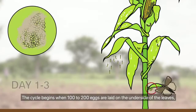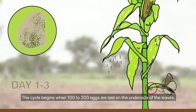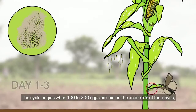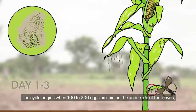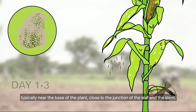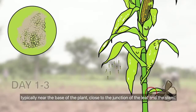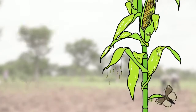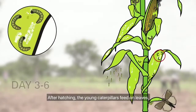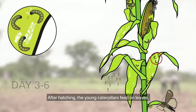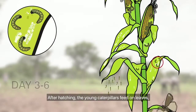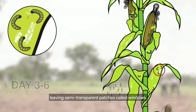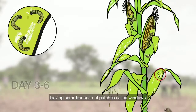The cycle begins when 100 to 200 eggs are laid on the underside of the leaves, typically near the base of the plant, close to the junction of the leaf and the stem. After hatching, the young caterpillars feed on leaves, leaving semi-transparent patches called windows.